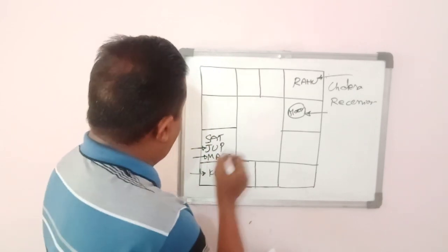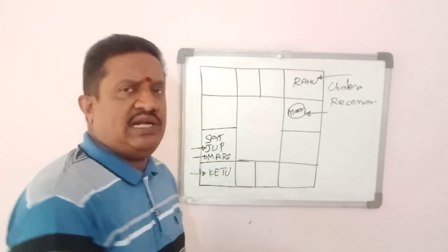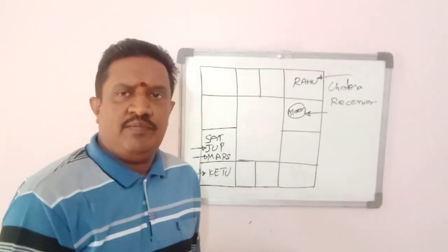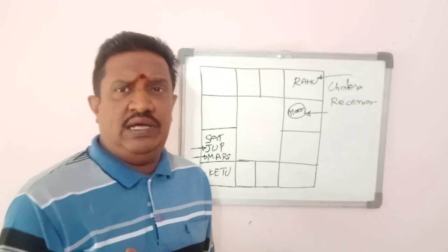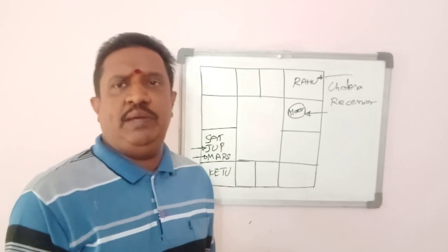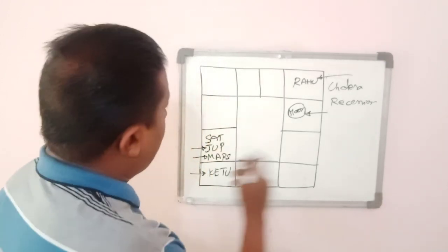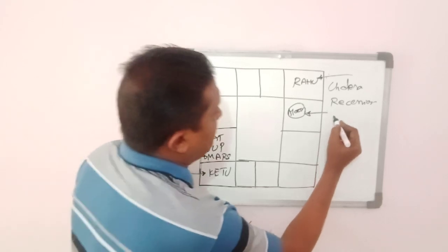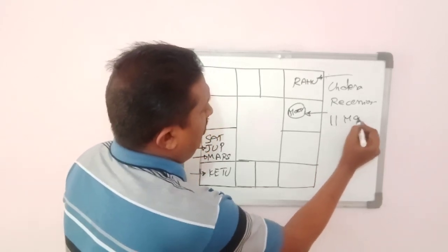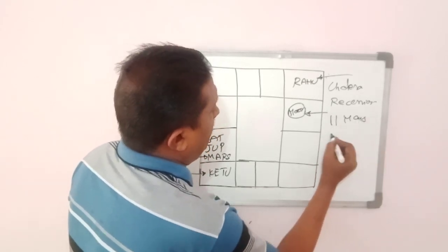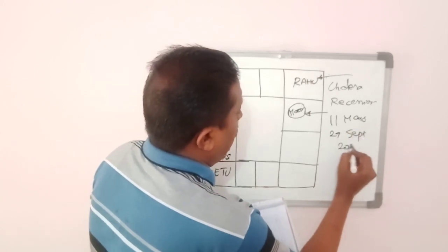The transit of Saturn in Uttarashara Nakshatra will be more dangerous from the perspective of people's health across the whole world. Saturn is starting his retrograde motion from 11th May till 29th September of 2020.